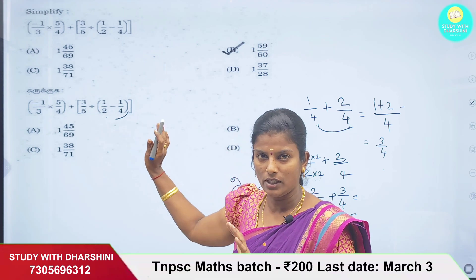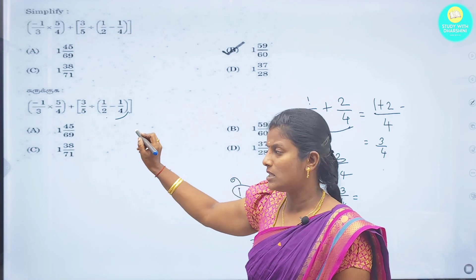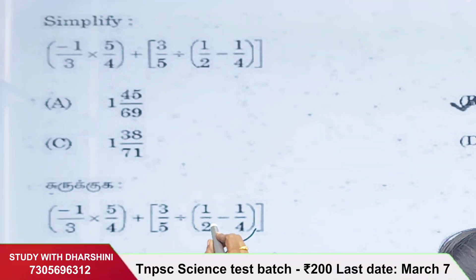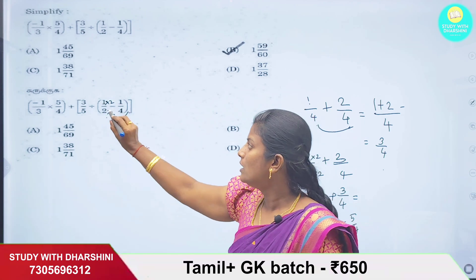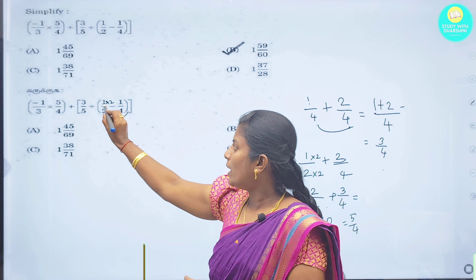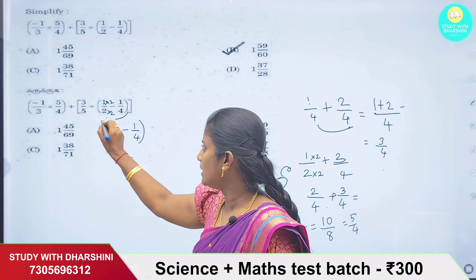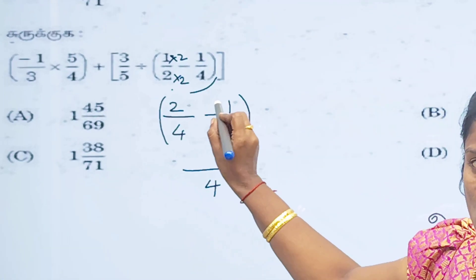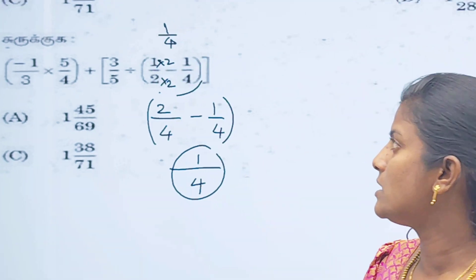The first part is 1/2 minus 1/4. The denominators are 2 and 4. We need the same denominator. Since 2 multiplied by 2 gives 4, we use 4. We multiply the numerator accordingly: 2 twos are 4, minus 1 by 4. Same denominator 4: 2 minus 1 is 1. So 1 by 4. We have solved this bracket — the answer is 1/4.